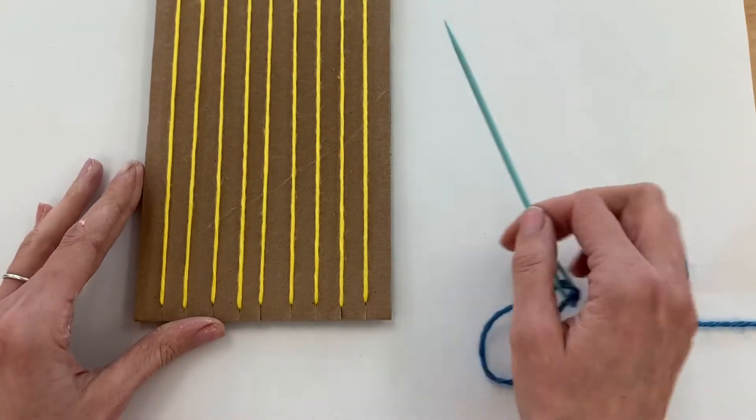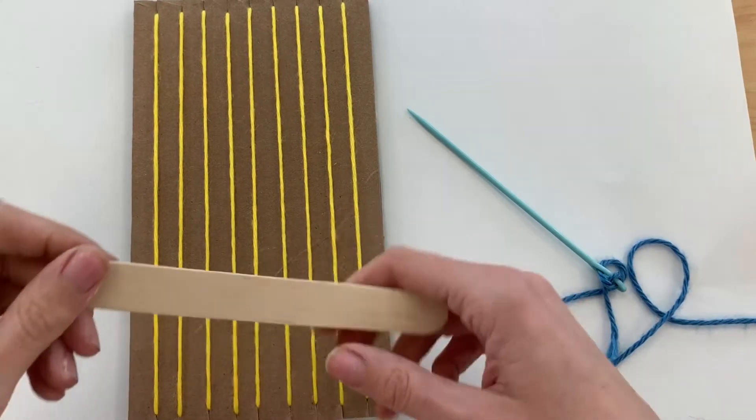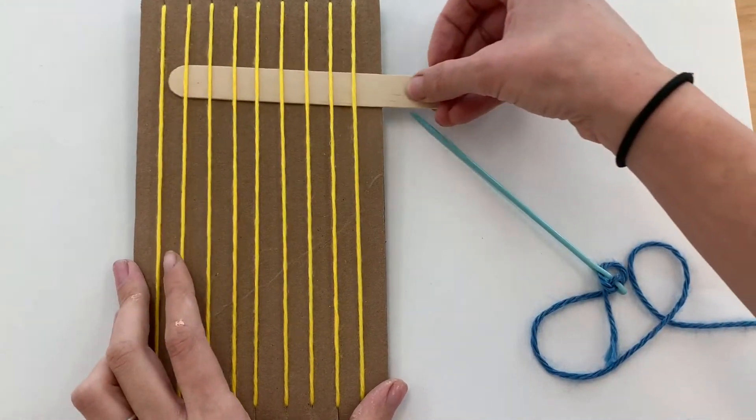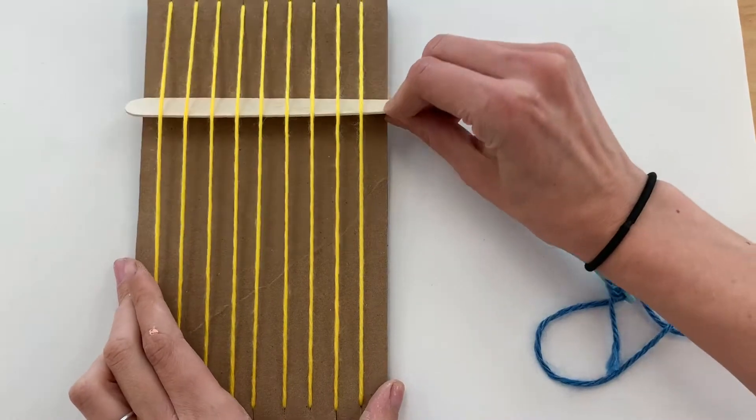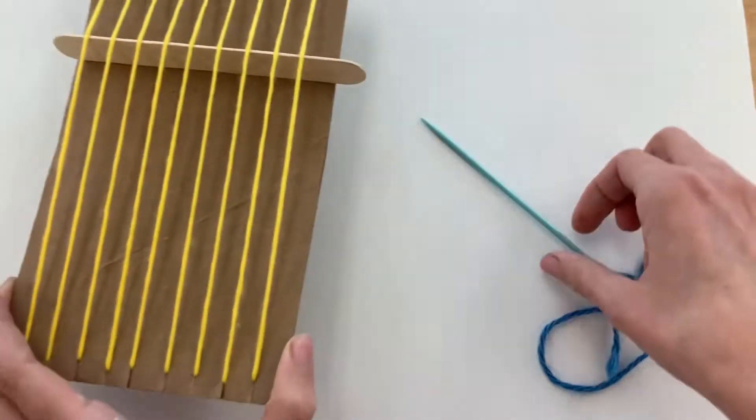Then, we get to start weaving on our loom. For that, I'm going to start with a popsicle stick, and I'm going to put this under all of my warp strings here, and then turn it sideways. That's just going to lift up all the strings, which makes it a lot easier to weave on.